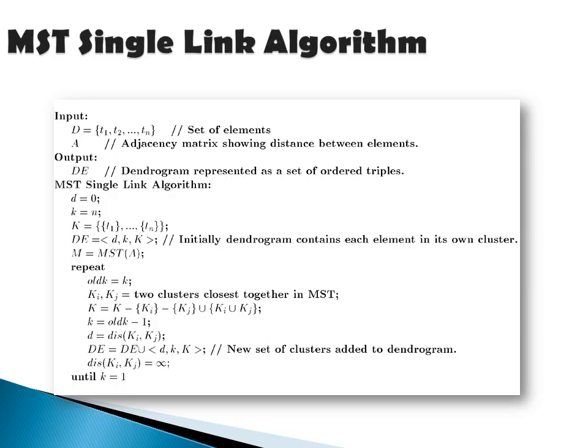The next is the minimum spanning tree single link algorithm. The input is the set of data points t1 to tn and the adjacency matrix showing distances between elements. The output is a dendrogram. The algorithm initializes d to 0, k as the number of data points n, and initially all data points are considered as individual clusters. The dendrogram is initialized, then at each step two clusters that are closest are found, merged, and the distance matrix is updated. This procedure continues until a single cluster remains, and all clusters are added to the dendrogram. The output depicts the hierarchy of cluster merging.